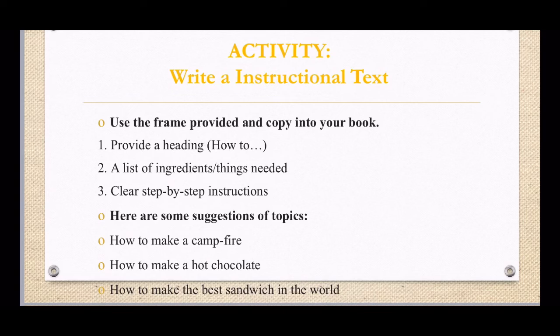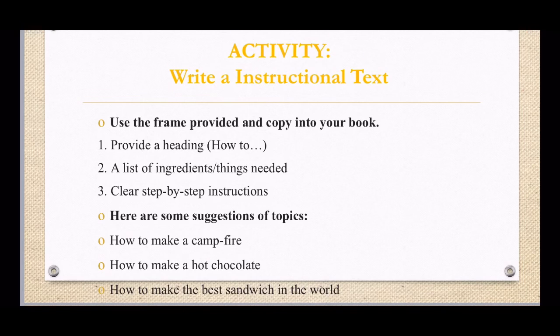So like on page 65, the little bubbles, there are some suggestions of topics that they gave us. How to make a campfire, how to make hot chocolate, how to make the best sandwich in the world. And another one was, how to bait a fish hook. So that's just some suggestions you can choose from. You can write a how-to about anything. It must just be appropriate and not something long, right? Something easy and simple that anybody can do, like how to make pancakes. Just be creative with it.